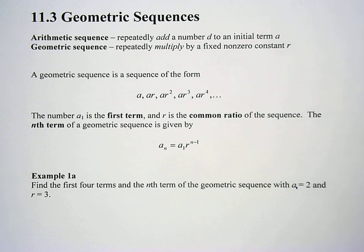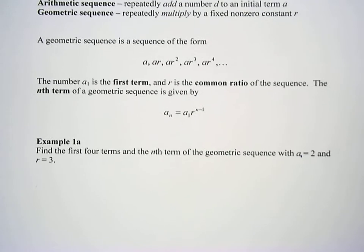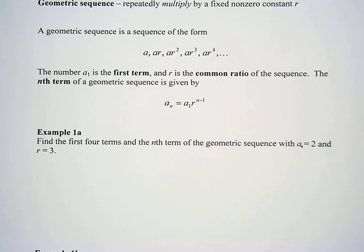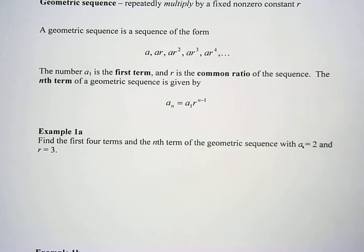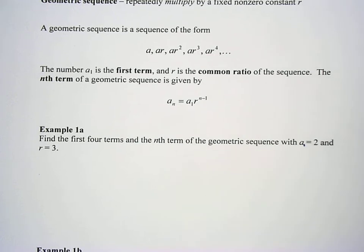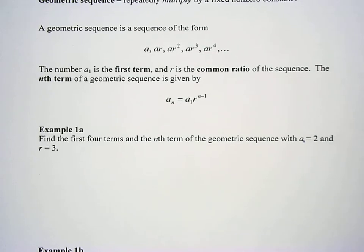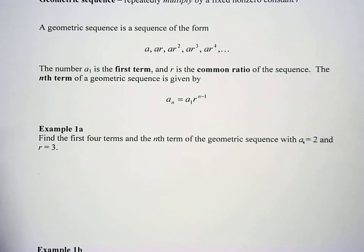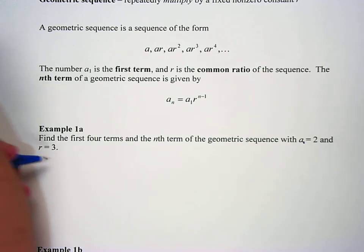We're going to do three examples here and Amanda's going to go through and write. The first example says find the first four terms and the nth term of the geometric sequence with a sub 1 equals 2. So if a sub 1 equals 2 and r equals 3, the first term is going to be what? The first term is going to be 2. Very good, Amanda, so a sub 1 equals 2.